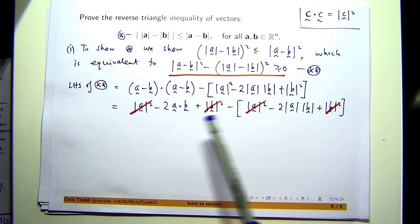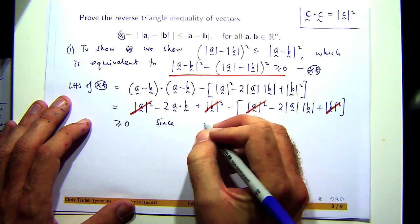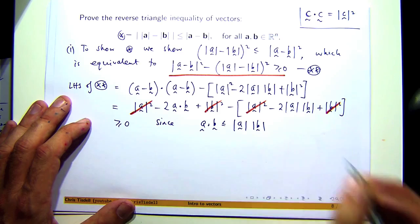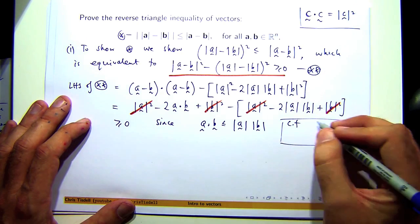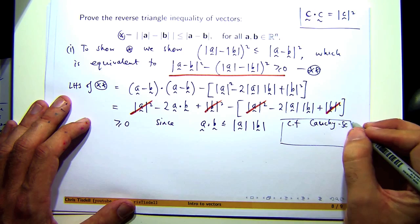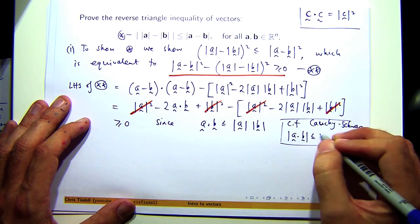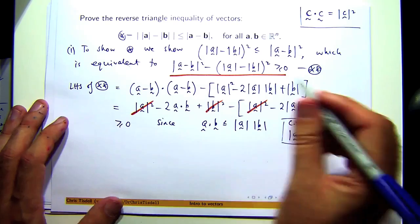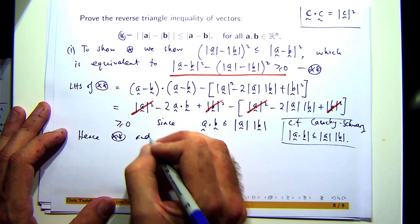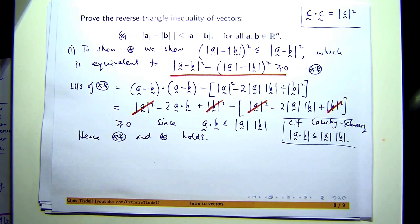Now, is this greater than or equal to zero? The answer is yes. It's a special inequality based on something called the Cauchy-Schwarz inequality. That comes from Cauchy-Schwarz, which says that this is true. Hence double star, and star holds. So to prove that, you do need to use this Cauchy-Schwarz inequality. Now, it's not necessarily the fastest way to prove that inequality, but it's one way using the dot product.